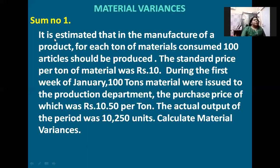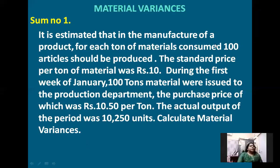The problem: it is estimated that in the manufacture of a product, for each ton of materials consumed, 100 articles should be produced. The standard price per ton of material was rupees 10. During the first week of January, 100 tons of materials were issued to the production department. The purchase price was rupees 10.50 per ton. The actual output of the period was 10,250 units. The question is: calculate material variances.